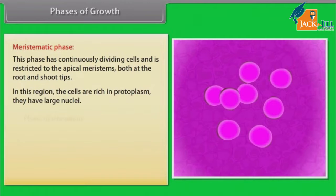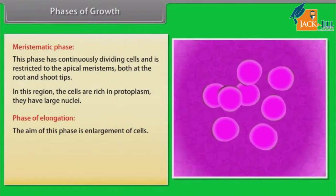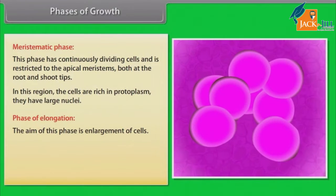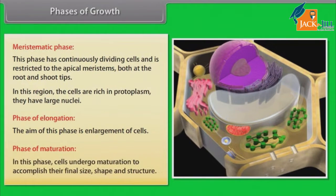Phase of elongation: The aim of this phase is enlargement of cells. Phase of maturation: In this phase, cells undergo maturation to accomplish their final size, shape, and structure.